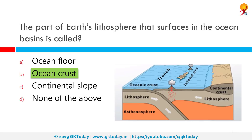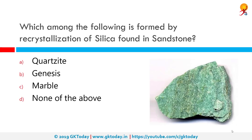The crust overlies the solidified and uppermost layer of the mantle. Which among the following is formed by recrystallization of silica found in sandstone? The correct answer is quartzite. Quartzite is a hard metamorphic rock which was originally sandstone, converted into quartzite through heating and pressure.